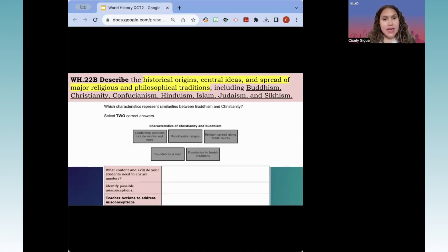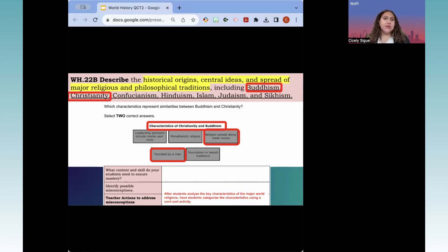Here we're focusing specifically in this SE on the historical origins, central ideas, and the spreading of these religions. And then, as you can clearly see, the underlying religions and philosophical traditions are a focus. This question, and this time, teachers, I am asking you guys to look at possible teacher actions to address the misconception. This question clearly focuses on Buddhism and Christianity. What do they have in common? The correct answer: religion spread along trade routes, founded by man. What are some teacher action steps to address these misconceptions? After having your students analyze key characteristics of the major world religions, which there is an activity provided by the district that does this, you may have your students categorize or even complete a Venn diagram on singularities and differences of Christianity and Buddhism. I want you to also think about some other ways that you think you could possibly bring some teacher actions to address common misconceptions for this possible answer and this question.